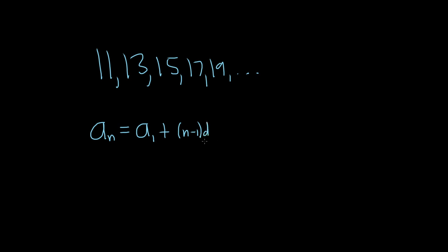d here is called the common difference. Here the first term is simply 11, so we have a sub n equals 11 plus n minus 1 times d.